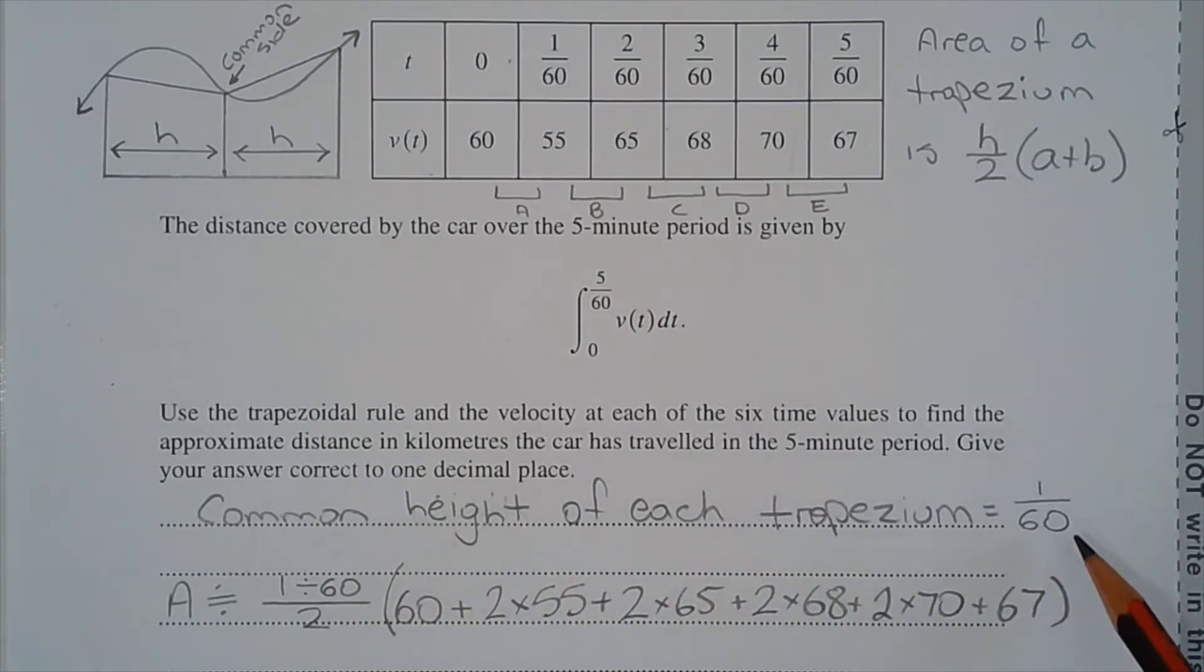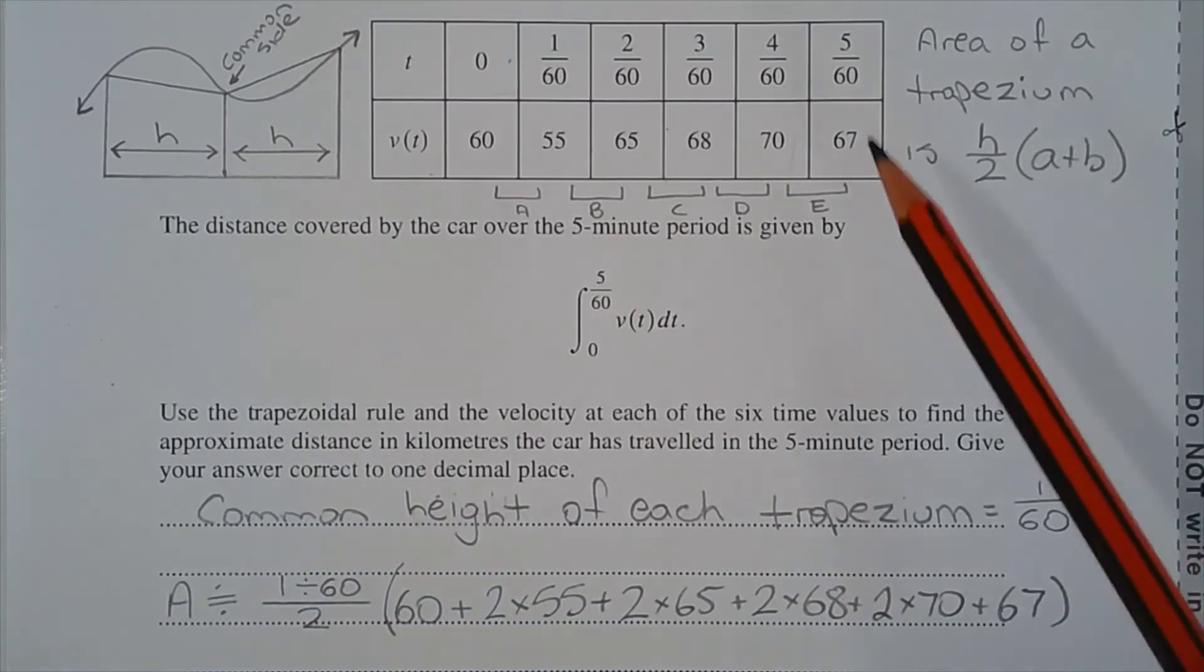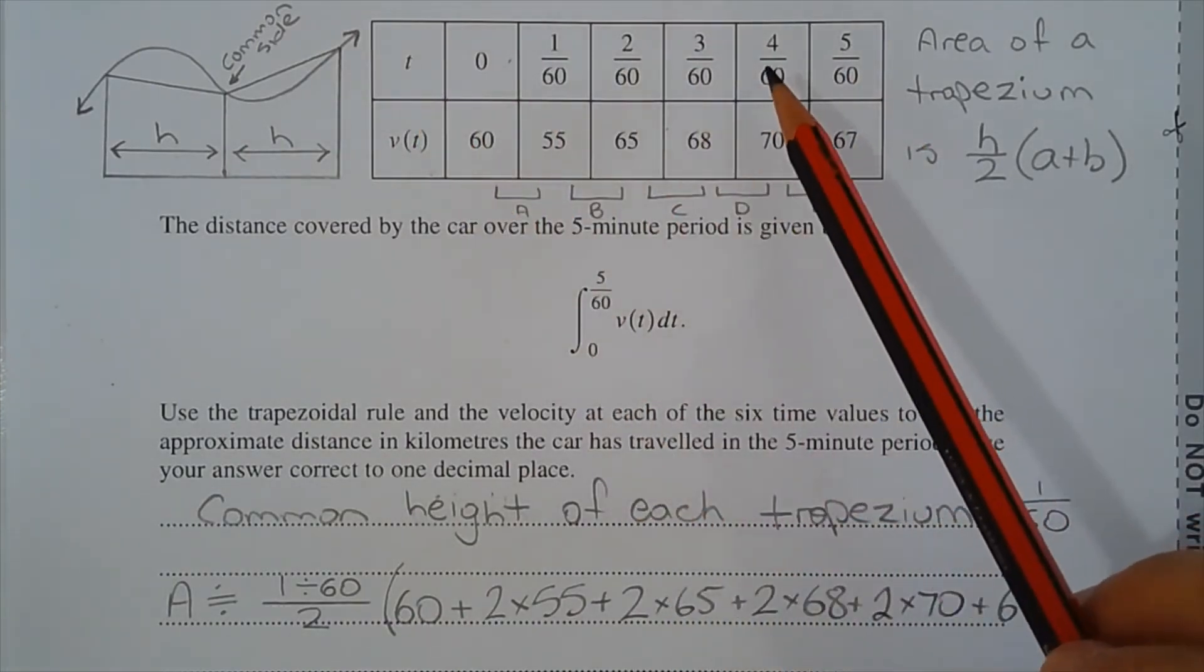Now the common height of each trapezium is 1 over 60, and that can be found by taking any two consecutive values of t and subtracting one from the other.